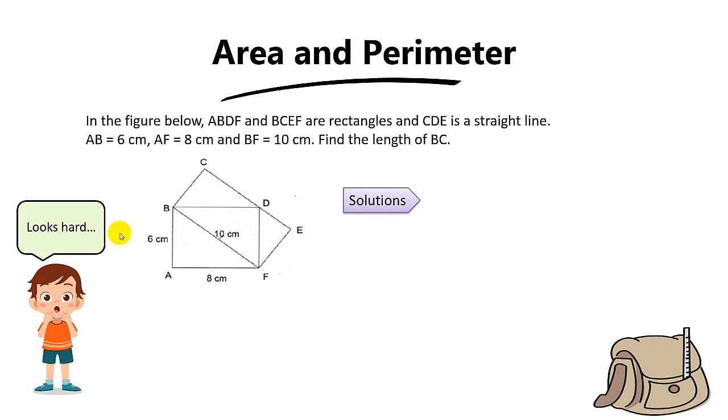All right, so in the figure below, ABDF and BCEF are rectangles. We have two rectangles over here and CDE is a straight line. Then we also know that AB is 6 cm, AF is 8 cm, and BF is 10 cm. The lengths are given over here.